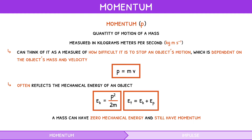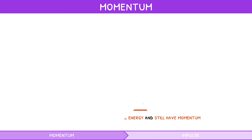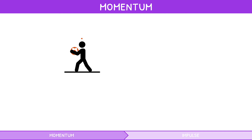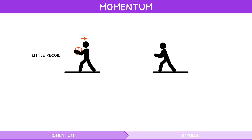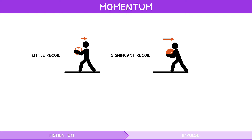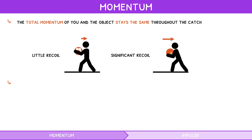But how does momentum interact between two objects? Well, catching either object transfers all of its momentum to you. When catching the football there is little recoil, but the bowling ball would create significant recoil. In both situations, the total momentum of you and the object stays the same throughout the catch.